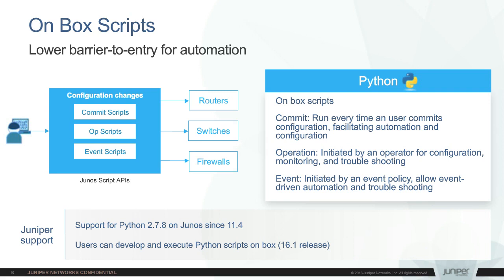Finally, we have event scripts. Event scripts are very much like cron jobs for those familiar with Unix terminology — these are things that just run periodically. You could schedule these to run every five minutes or every ten minutes, or in response to some event that happens on the box. A good example: an event script that takes some action when it sees a log message such as a link going down. We see an SNMP link alarm go down in the syslog, then kick off a script that might contact some ticketing system. All very powerful things that can be installed directly on the box — perfect for latency-sensitive applications.